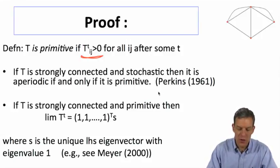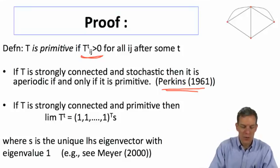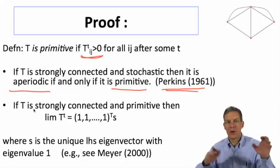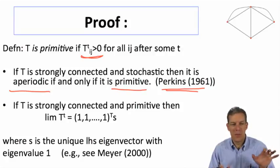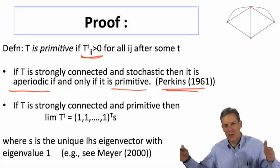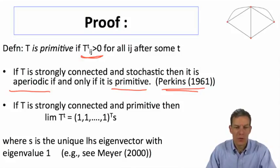Okay, so one thing that you can show, and there's a number of different ways you can show this, this goes back in linear algebra quite a ways, so Perkins 61 will give you one proof of this. But if you've got something strongly connected and stochastic, then it's aperiodic if and only if it's primitive. So primitive is equivalent to aperiodicity here. Basically, if it's periodic, then things aren't going to always be all entries zero. They can blink on and off. If it's aperiodic, then after some time period, basically all the entries are going to become positive, and you end up with a primitive matrix. Okay, so that's useful.